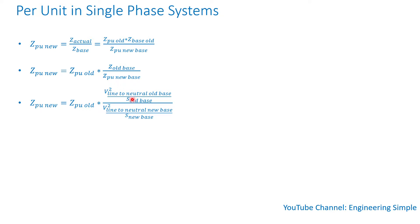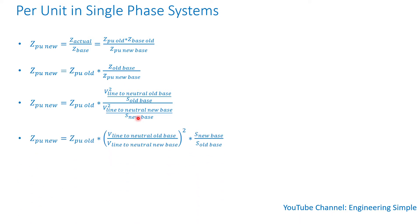Since impedance equals voltage squared divided by apparent power S, I substitute each base impedance with voltage squared over S. You can see it's old base over new base — so instead of using impedances directly, I use voltage squared divided by apparent power. After rearranging, the per unit impedance on the new base equals the per unit impedance on the old base times the line-to-neutral voltage on the old base divided by the line-to-neutral voltage on the new base, squared, times the apparent power on the new base.